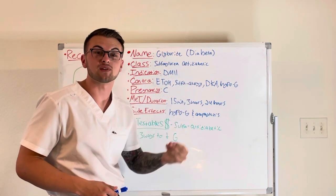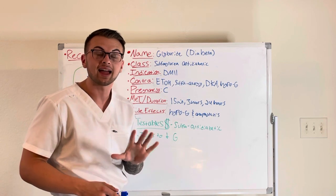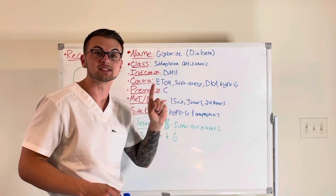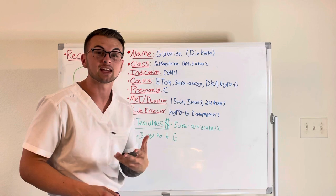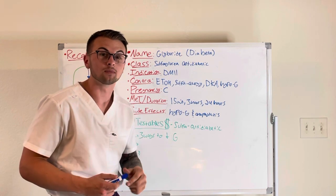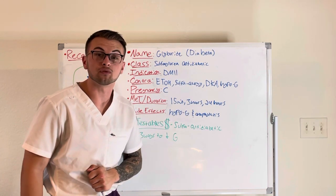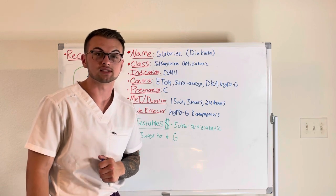This drug is classified as a sulfonylurea antidiabetic and is given for diabetes mellitus type 2. It cannot be taken with alcohol or ethanol or with patients who have sulfa allergies, DKA, or hypoglycemia.